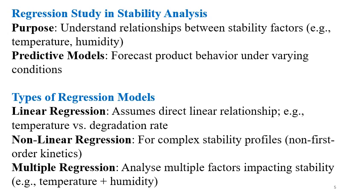Regression study in stability analysis is used to understand the relationship between stability factors like environmental conditions — temperature and humidity — and to forecast product behavior under varying conditions. Types of regression models include linear regression, which assumes a direct linear relationship such as temperature versus degradation rate; non-linear regression for complex stability profiles and non-first-order kinetics; and multiple regression for analyzing multiple factors impacting stability, such as temperature combined with humidity.